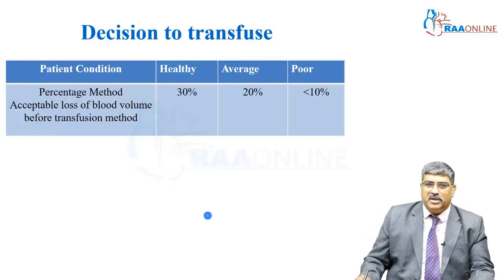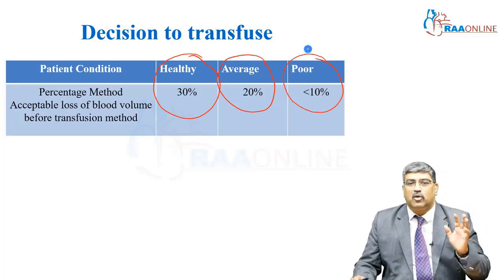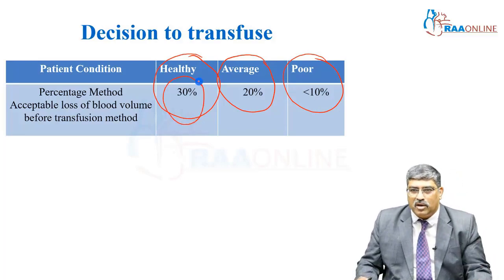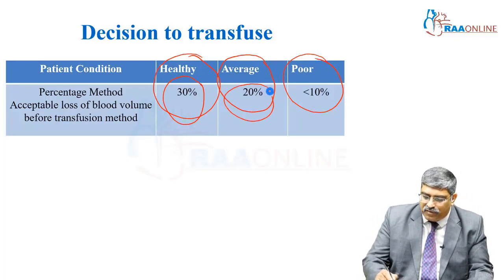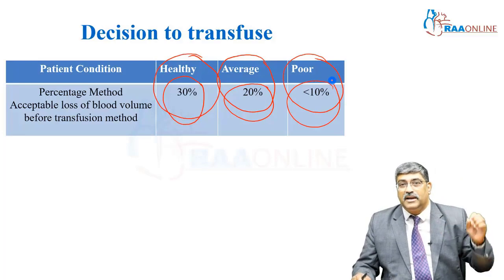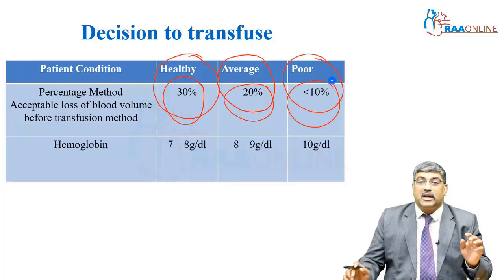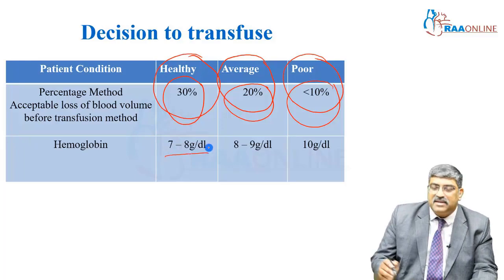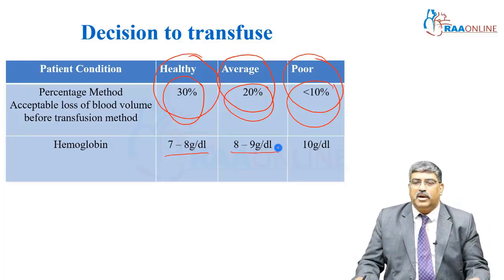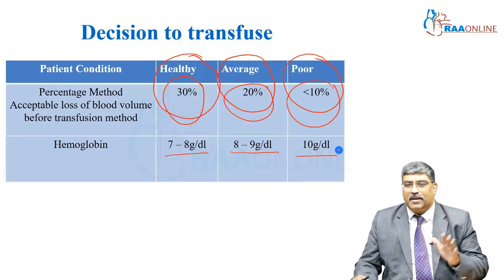When considering RBC transfusion: a healthy patient has no comorbidities, an average patient may have one or two, and a poor patient will have three to four. In a healthy patient, if you lose about 30% of blood volume, you can go for RBC transfusion. In an average patient, at 20% blood volume loss, you transfuse. In a poor comorbid patient, even 10% volume loss warrants RBC transfusion. With regard to hemoglobin: transfuse at less than 7 to 8 g/dL in a healthy individual, at 8 to 9 g/dL in an average patient with two to three comorbidities, and at less than 10 g/dL in a poor moribund patient.